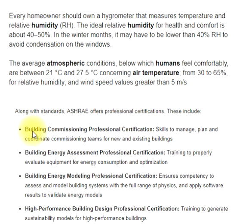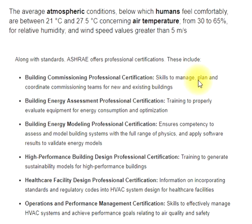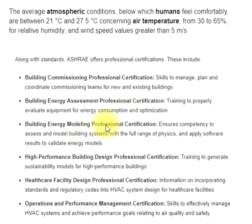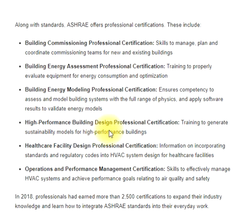Along with standards, ASHRAE offers professional certifications. These include: Building Commissioning Professional certification — skills to manage, plan and coordinate commissioning teams for new and existing buildings; Building Energy Assessment Professional certification — training to properly evaluate equipment for energy consumption and optimization; Building Energy Modeling Professional certification — ensures competency to assess and model building systems with the full range of physics and apply software results to validate energy models; and High-Performance Building Design Professional certification — training to generate sustainability models for high-performance buildings.